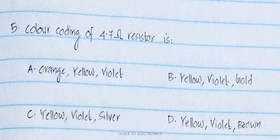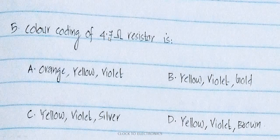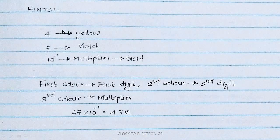Next is resistor color coding — the color code for a 4.7 ohm resistor. Using the mnemonic BB-ROY Great Britain Have a Very Good Wife, the color code depends on the first digit, second digit, and a multiplier. For 4.7 ohm: 4 corresponds to yellow, 7 corresponds to violet, and the multiplier is 10⁻¹. So the color code gives 4.7 ohm.